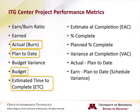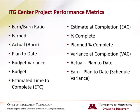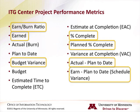The seven metrics that provide information about the current state of the project are: earn-burn ratio, earned, budget variance, percent complete, planned percent complete, actual minus plan to date, and earned minus plan to date.